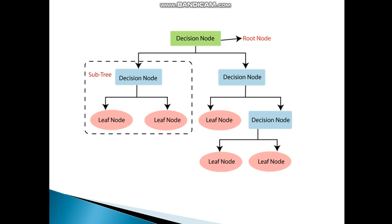In the sub-tree, one Decision Node is divided into two Leaf Nodes. On the right side, the Decision Node is again divided into Leaf Node and Decision Node, which is then divided into two Leaf Nodes.